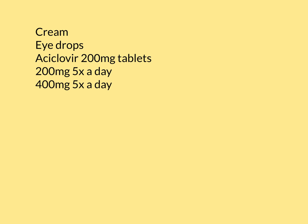Let's now talk about the actual treatment regimes. Acyclovir is available as creams, eye drops, tablets, and as an intravenous preparation. Creams are suitable for putting inside the mouth and on the lips to treat herpetic infections there, on the skin to treat HSV-1 and HSV-2 skin infections, and on the genitals for genital herpetic infections. Eye drops are also available for people with herpetic keratitis.